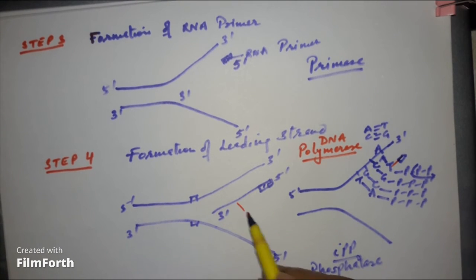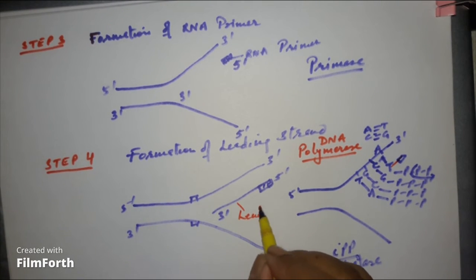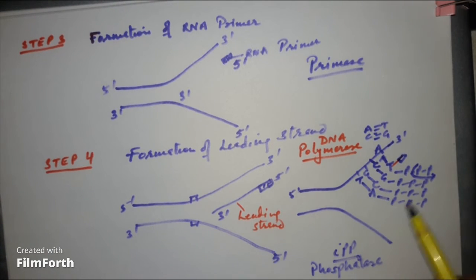DNA polymerase is a very important enzyme for the formation of this chain. Clear? So leading strand, this is the leading strand formed in 5 prime to 3 prime direction.